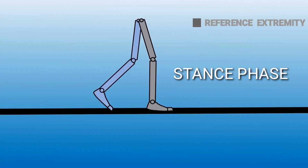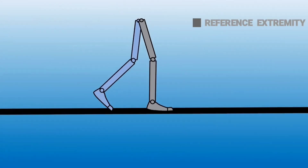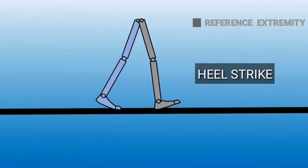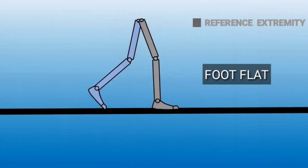We'll discuss the events occurring in the stance phase, taking our right extremity as the reference extremity. The events in the stance phase are: heel strike, foot flat, mid stance, heel off, and toe off. Heel strike is the point at which the reference extremity makes initial contact with the ground — it is also called initial contact. Foot flat refers to the instant when our foot is completely flat on the ground, and it occurs at seven percent of the gait cycle.